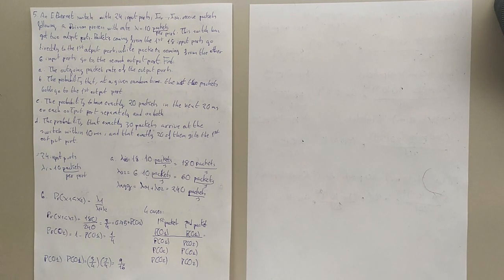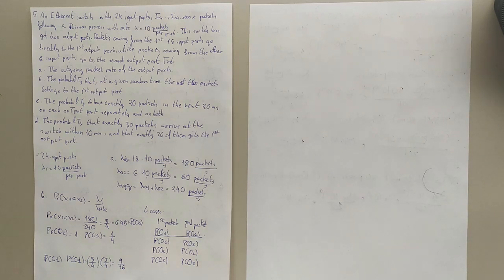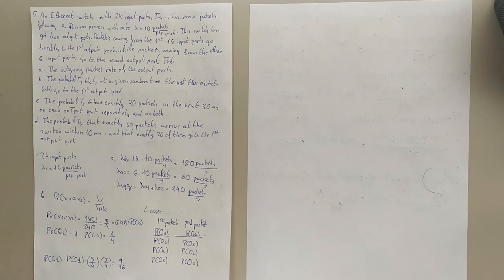A switch with 24 input ports, i1 to i24, receives packets following a Poisson process with rate lambda i, which equals 10 packets per port. This switch has two output ports: packets coming from the first 18 input ports go directly to the first output port, while packets coming from the other six input ports go to the second output port.